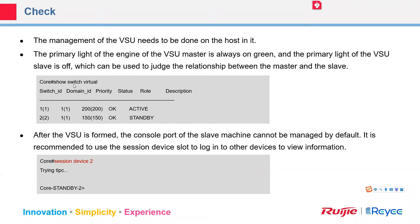To verify, use the command 'show switch virtual' to check the switch ID, domain ID, priority, state, and role (active or standby). By default, when using the console interface, you are connected to the active switch. If you want to check information on the standby, use the command 'session device 2' or add the switch ID of the target device.